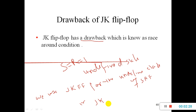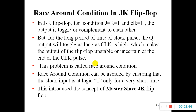Though we are able to sort out the problem of SR flip-flop, JK flip-flop itself leads to another drawback called race around condition. For the condition JK=1 and clock high, the output toggles and is complementary to each other, as we can check from the truth table of JK flip-flop.